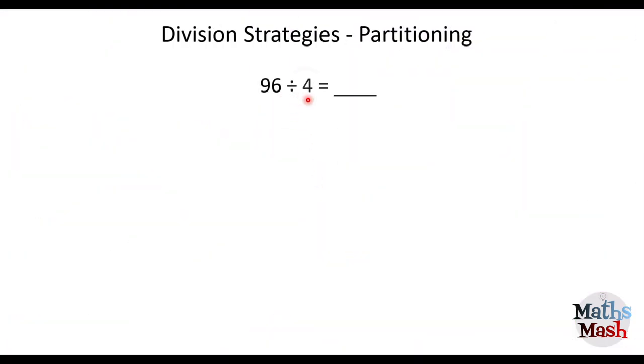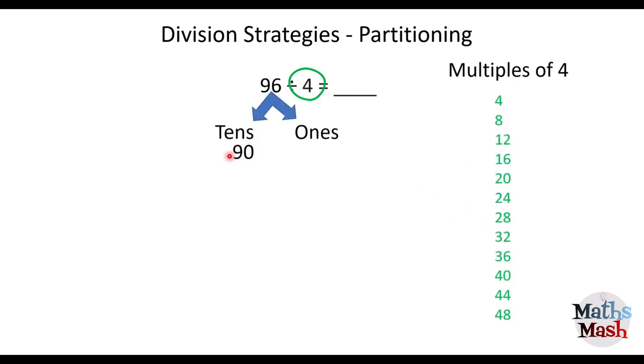96 divided by 4. Again, we have 4, so we're going to write the multiples of 4 down the side here. I'm going to partition 96 into tens and ones. I've got 90 and 6 here. And 4 doesn't go evenly into 6. So I'm going to take a set of 10 from the tens column. I'm going to make that 80 now. And I'm going to slide this 10 over to the 6. And that's going to turn that into 16.